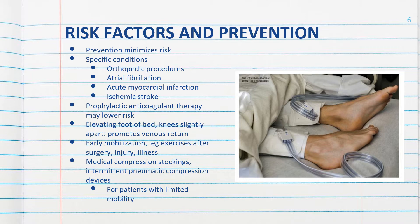In many cases, prophylactic anticoagulant therapy is prescribed to lower the risk of DVT. Other preventive measures include elevating the foot of the bed with the knees slightly flexed to promote venous return, early mobilization, leg exercises after surgery or injury, and medical compression stockings and pneumatic compression devices. Patients should be wearing these if they have limited mobility or are on bed rest.